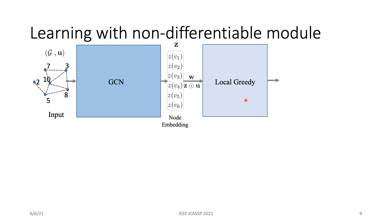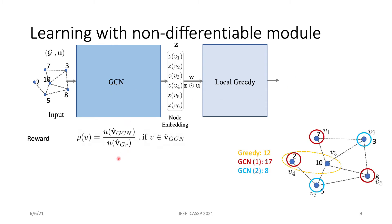Now, let's look at how we train the GCN. In our downstream framework, the GCN is followed by a non-differentiable local greedy algorithm. So we cannot back-propagate gradient from here to the GCN. Therefore, we use a reinforcement learning approach. Here, the reward is the ratio between the total utility of the GCN solution and the total utility of the greedy solution.